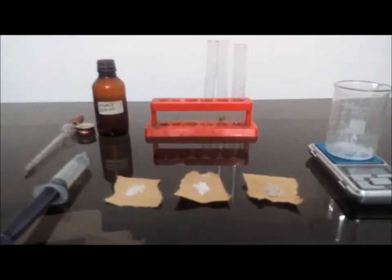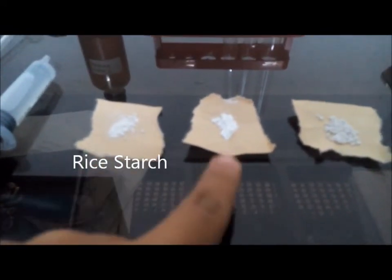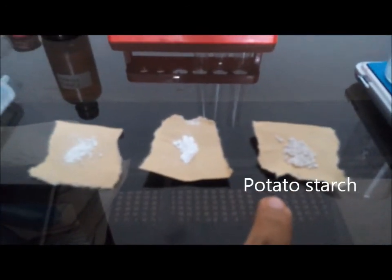Hello, you can see in front of me I have three different substances here. Actually, these are three different types of starch. This one is rice starch, this one is corn starch, and this one is potato starch.